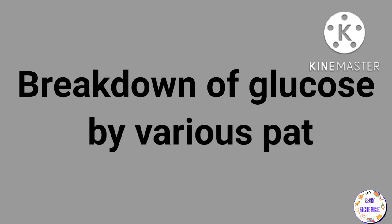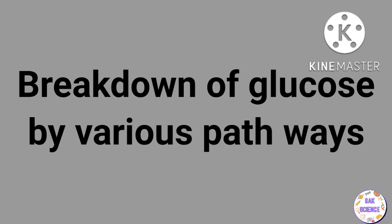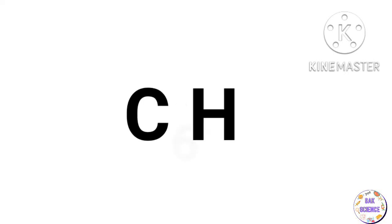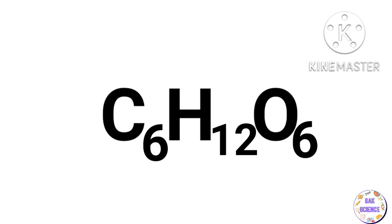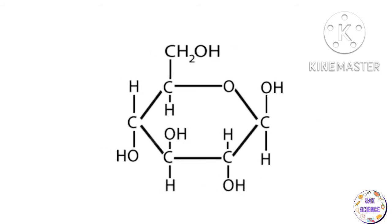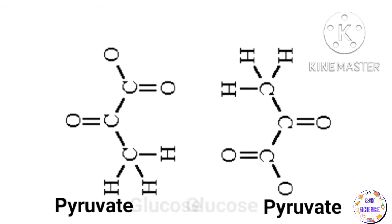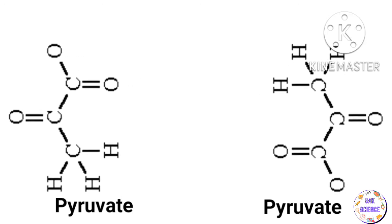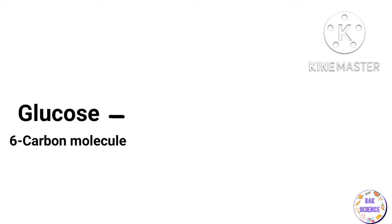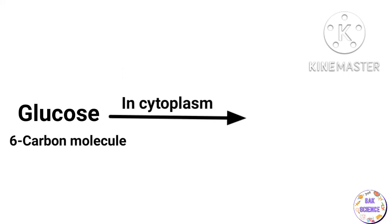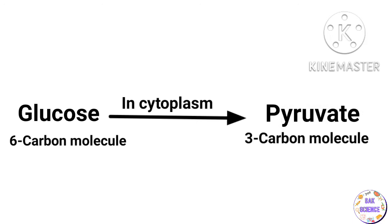Dear students, in this video let us study about breakdown of glucose by various pathways. The molecular formula of glucose is C6H12O6. The first step of glucose breakdown is the breakdown of the six carbon molecule of glucose into three carbon molecule of pyruvate in the cytoplasm. During the breakdown of glucose into pyruvate, energy is also released.